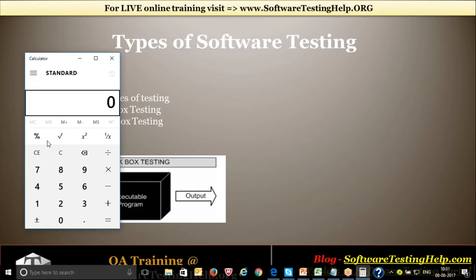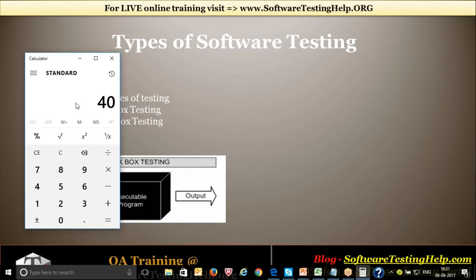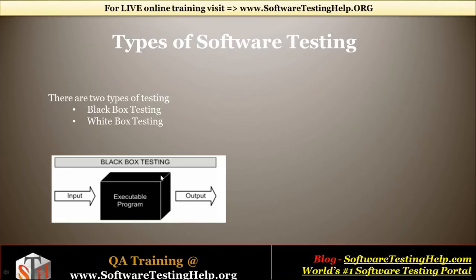For example, take a calculator. I enter 20 plus 20 and hit equals — I get 40. But I really don't know what is happening inside the calculator, what technology they've used, or what coding logic was implemented. It's a pure black box. Whatever you see in the front end is where you give input and expect output. You enter 20 plus 20 and the output should be 40.